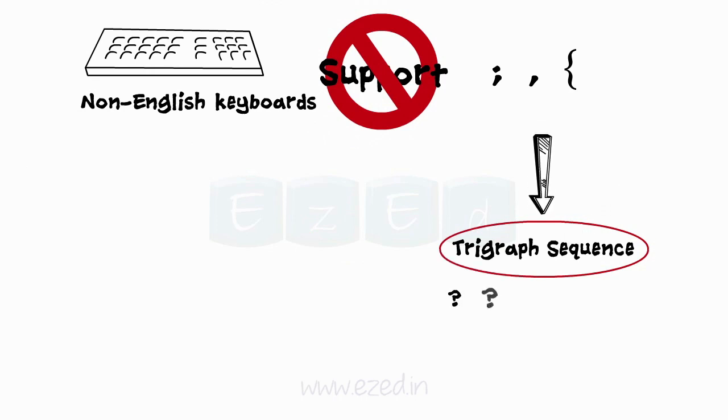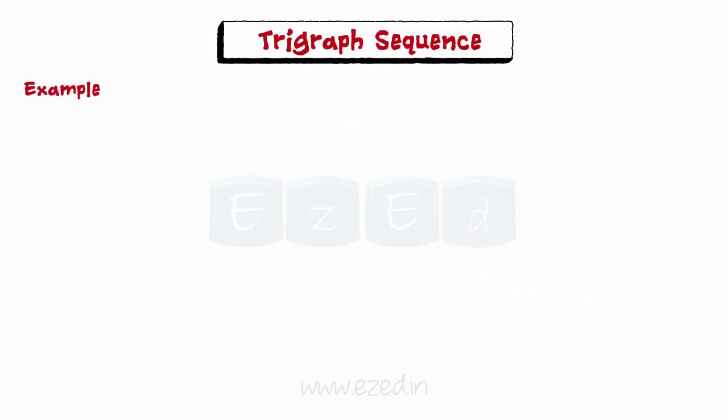Two question marks followed by another character. For example, if a keyboard does not support curly bracket, it can be still entered by using trigraph sequence. This notation gives an opening curly brace.